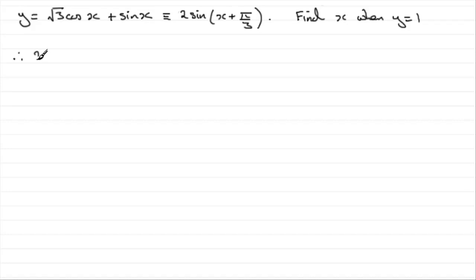So we've got therefore 2 sine of x plus pi upon 3 equals 1. The next thing we need to do is just divide both sides by 2, and so we're going to have sine of x plus pi upon 3 equals a half.